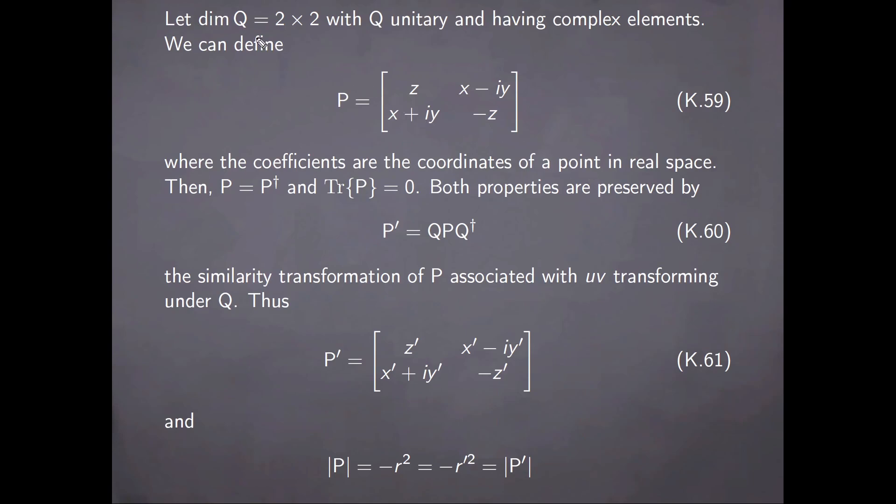We will consider now a matrix Q of dimension 2 by 2, with the condition that it is a unitary matrix and has complex elements. We can then define an additional matrix P, having the form here, where the coefficients x, y, and z are the coordinates of a point in real space. Then it is clear that with this form, P is self-adjoint and has a vanishing trace.